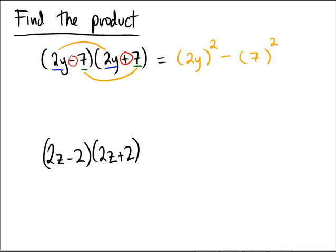So that means the final answer for this problem, once we multiply out and simplify, is 2 times 2 is 4, y times y is y squared, and then 7 times 7 is just 49. So the final answer is 4y squared minus 49.